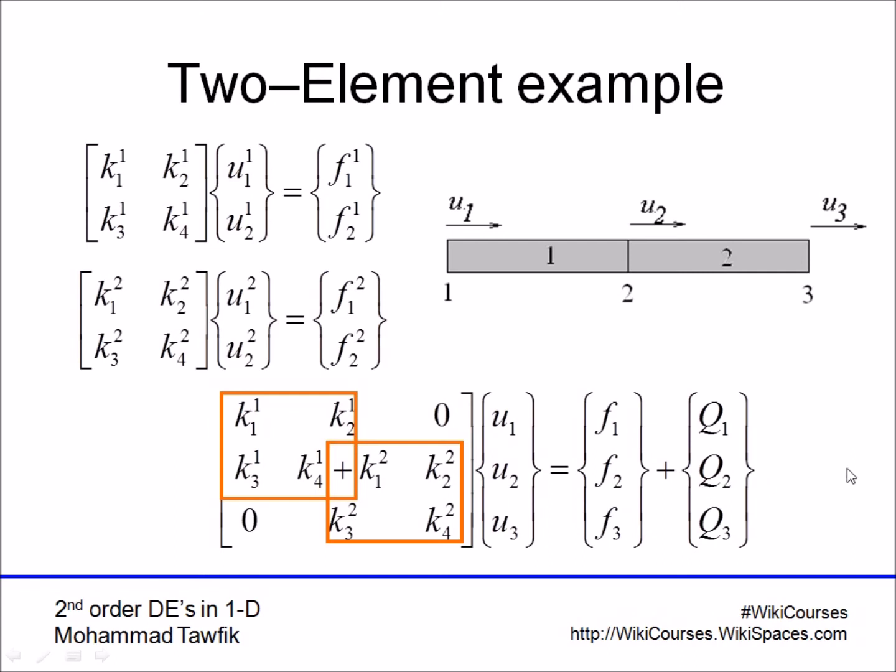This is the assembled matrix. This matrix presents the behavior of the function u in all the domain from point one to point three. Notice that when we did this addition of equations, we didn't really need to go through adding each and every two.